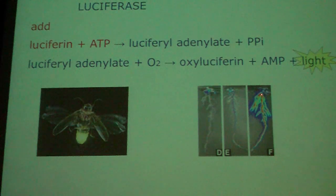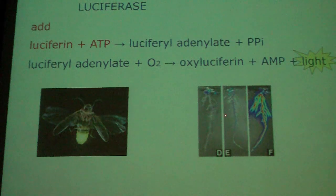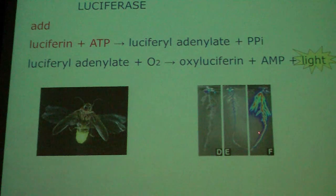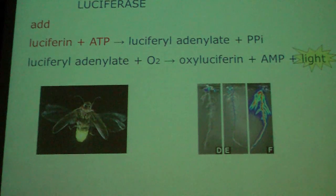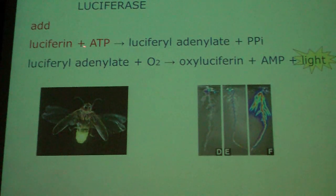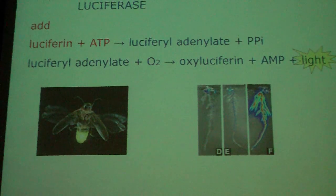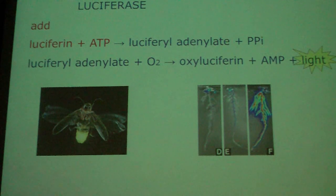In this image, the luciferase gene is used in an Arabidopsis plant and the CCD camera picks up the light emission. High emission appears red, lower emission appears blue. You can see three different plants, and the third plant has high expression of the luciferase gene. The plant contains the luciferase gene under control of a promoter. We spray luciferin and ATP onto the plant, place it under the CCD camera, which captures light for about two to three minutes, giving this kind of image.